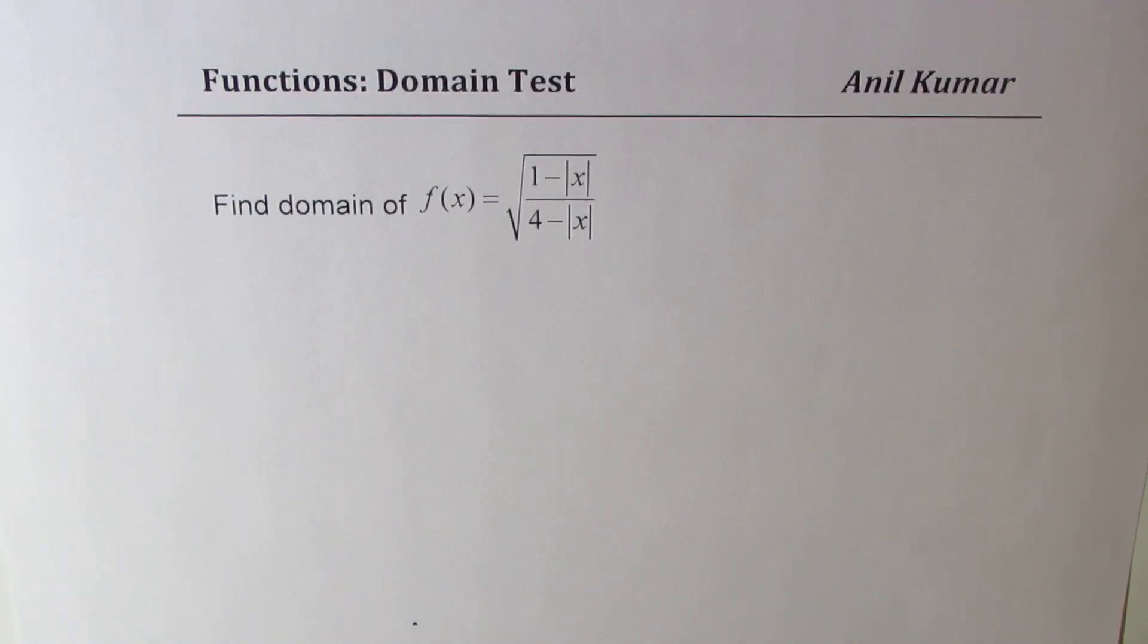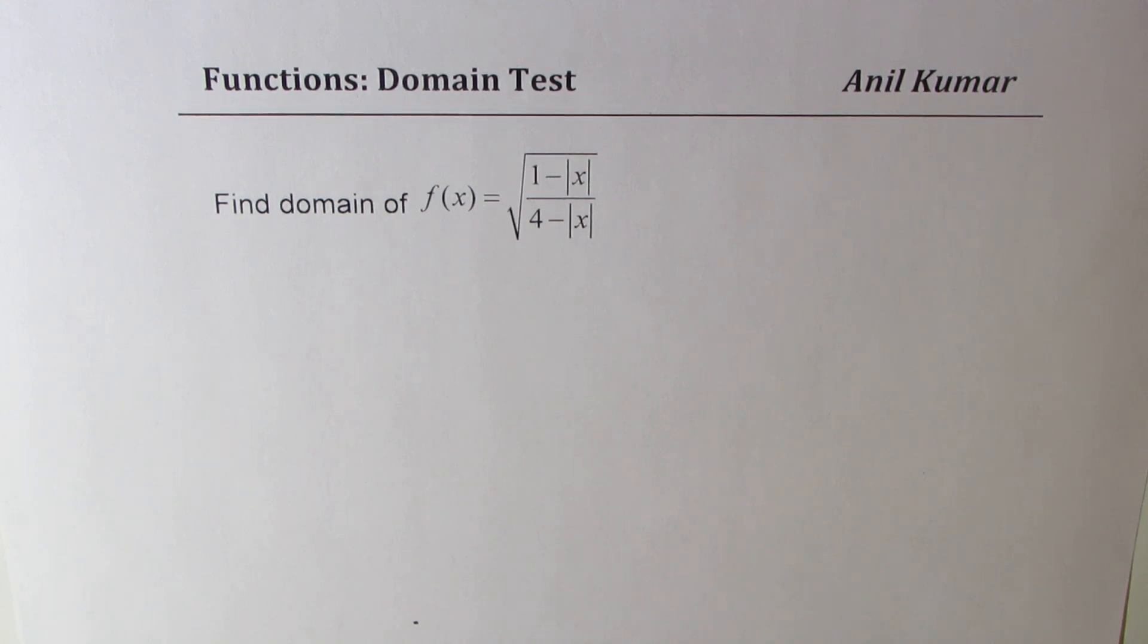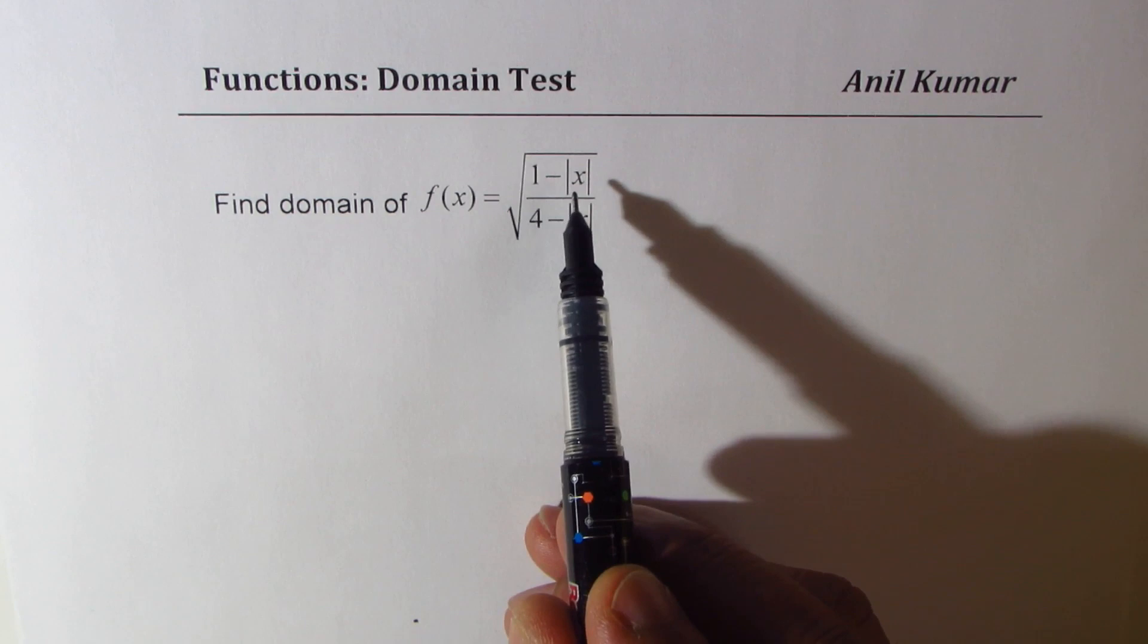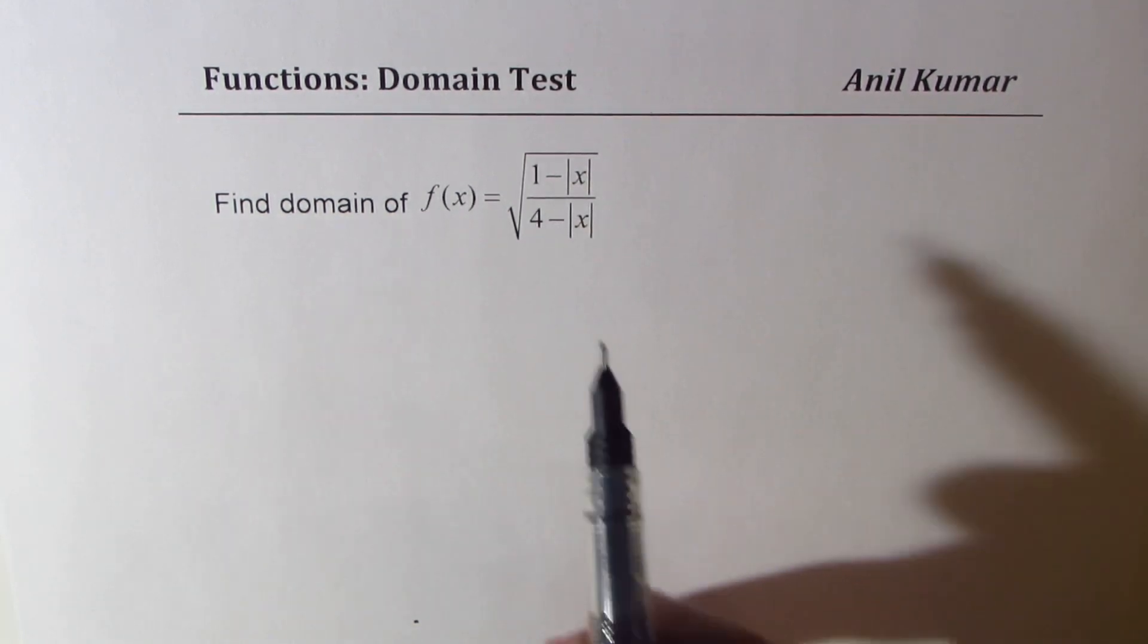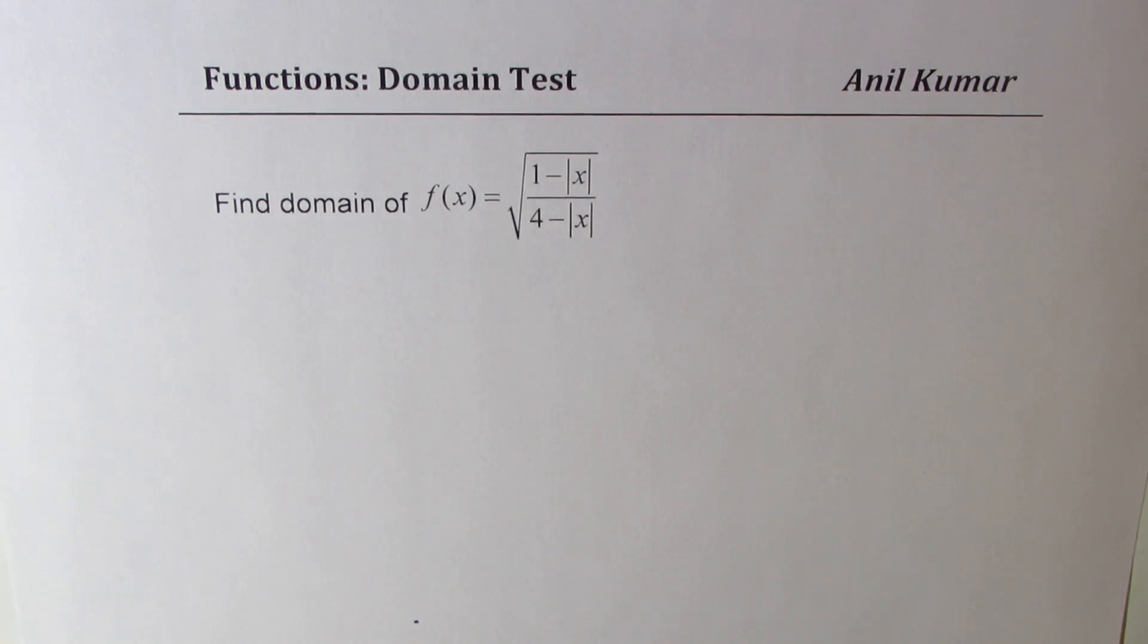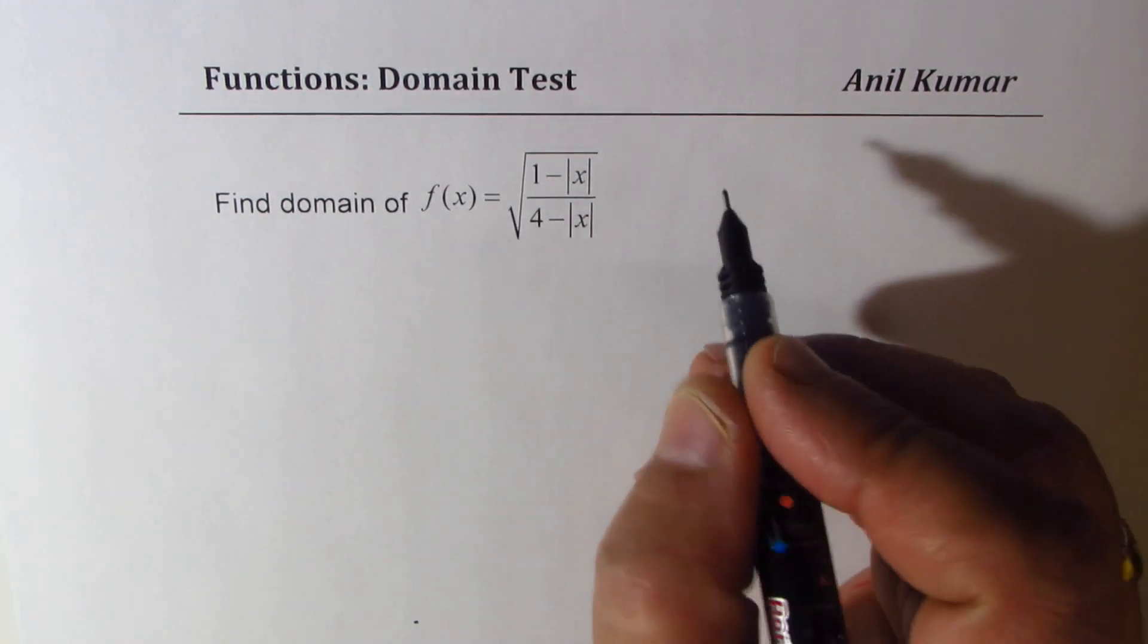Welcome! I'm sharing with you a question on domain. This is for my IB student Joseph and I hope its solution will help many other students. We need to find domain of the function square root of 1 minus absolute x divided by 4 minus absolute x. You can always pause the video and answer the question. Here is my solution.